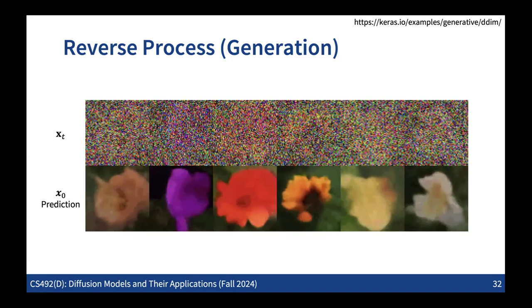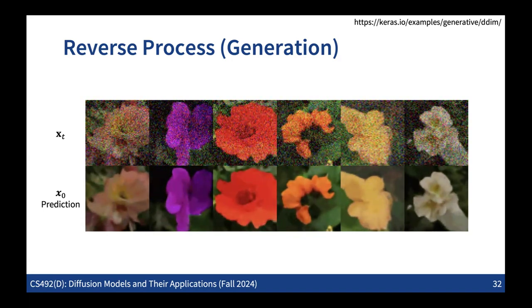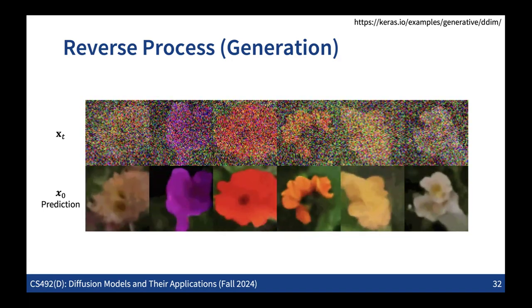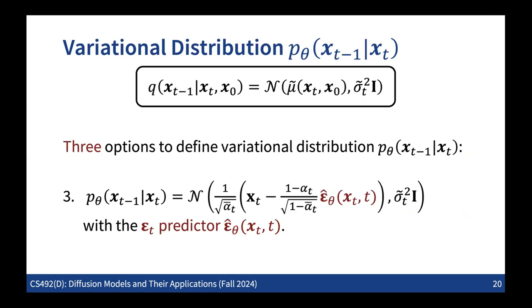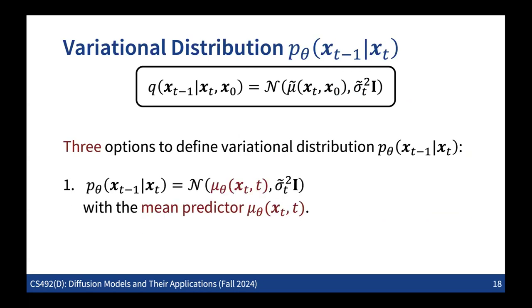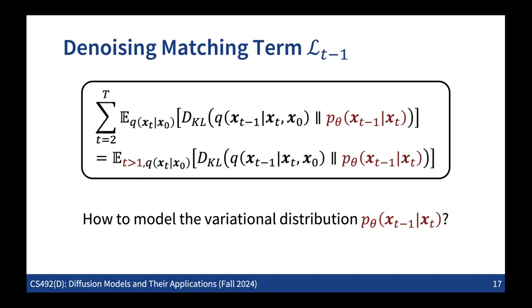Question: Why do we sample T from a uniform distribution during training? Because the loss function is defined as a sum over all time steps T from 2 to T capital. We convert this sum into an expected value, which corresponds to sampling T uniformly - since we are summing over all time steps equally. This comes from the definition of the denoising matching term.